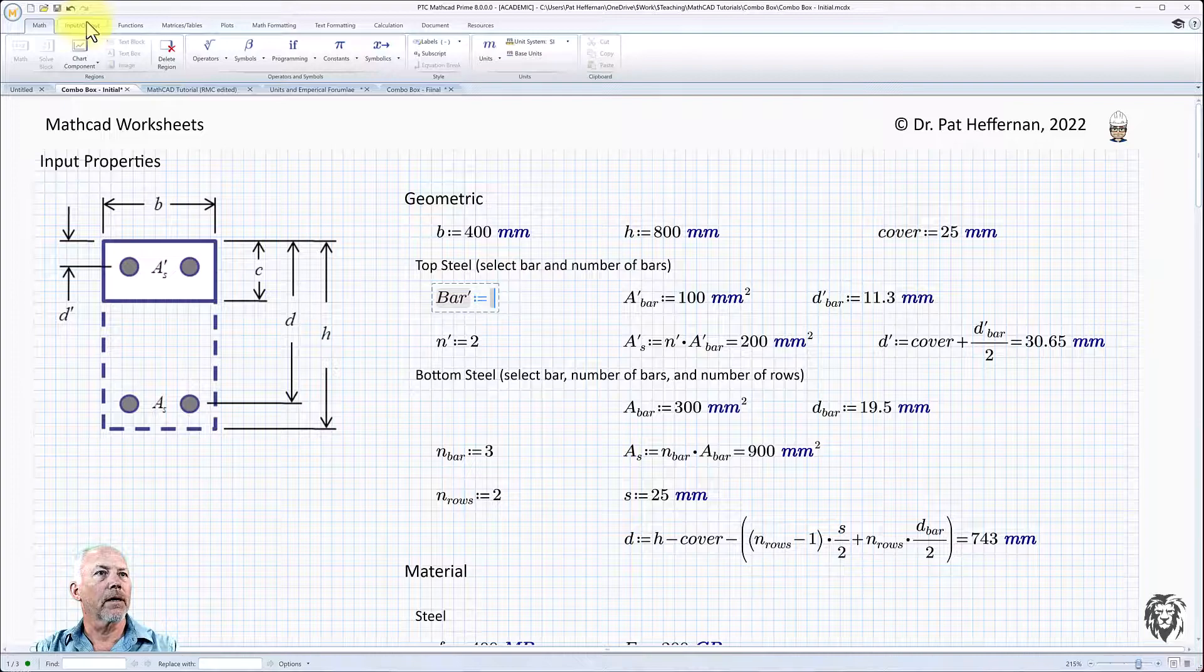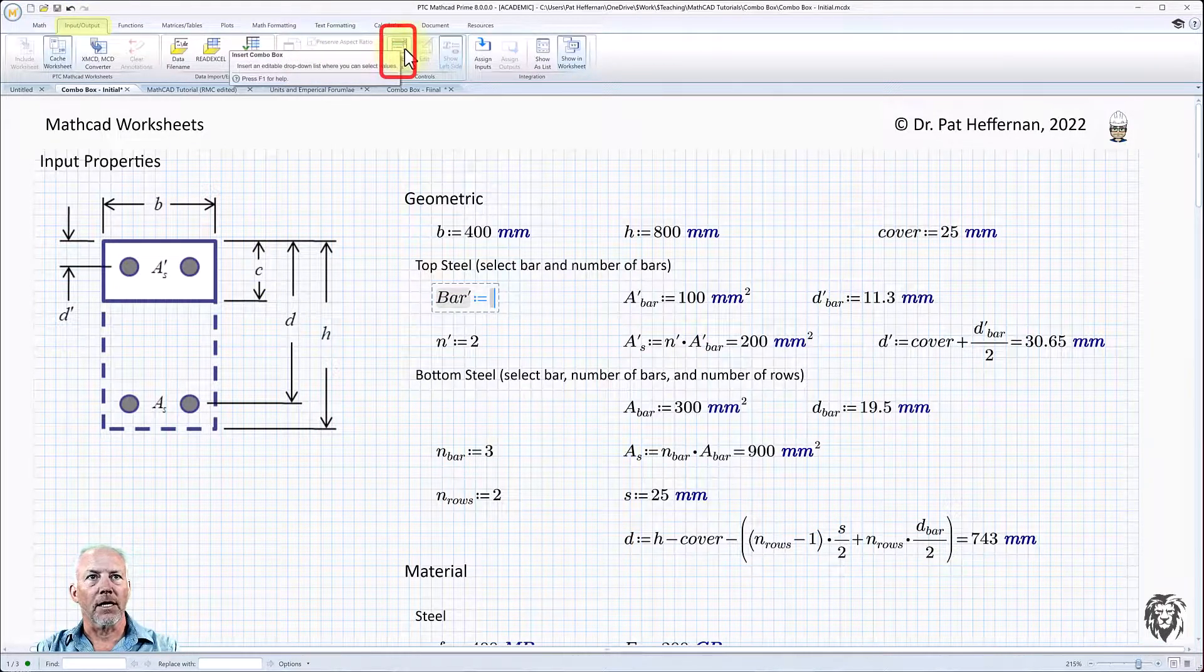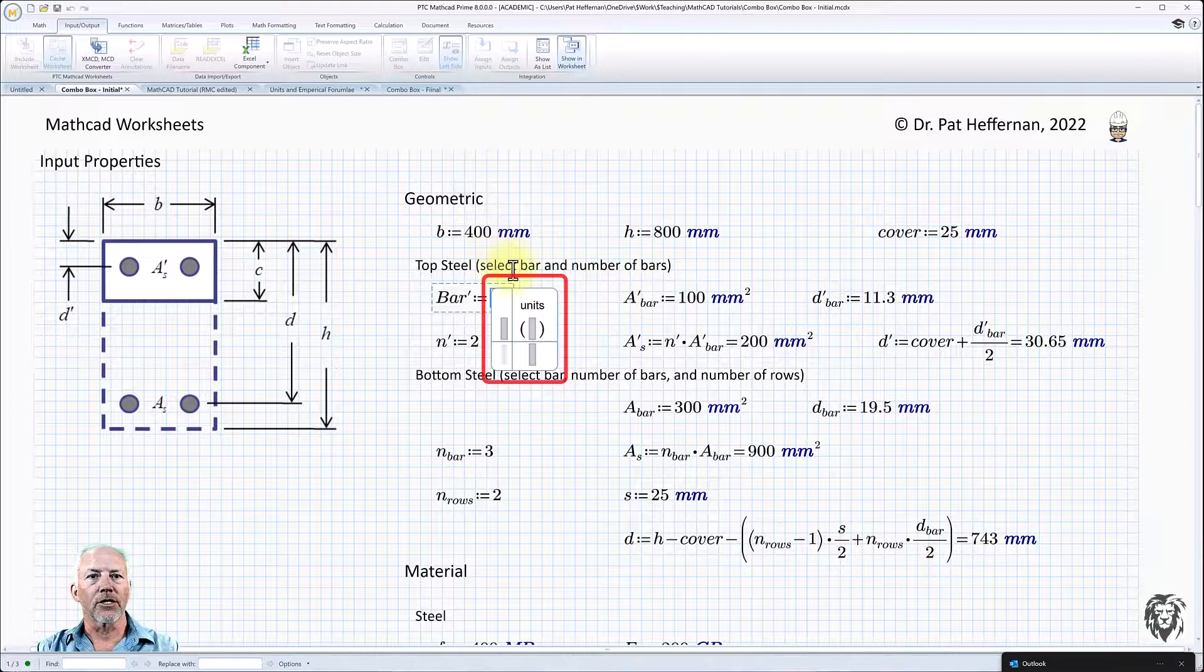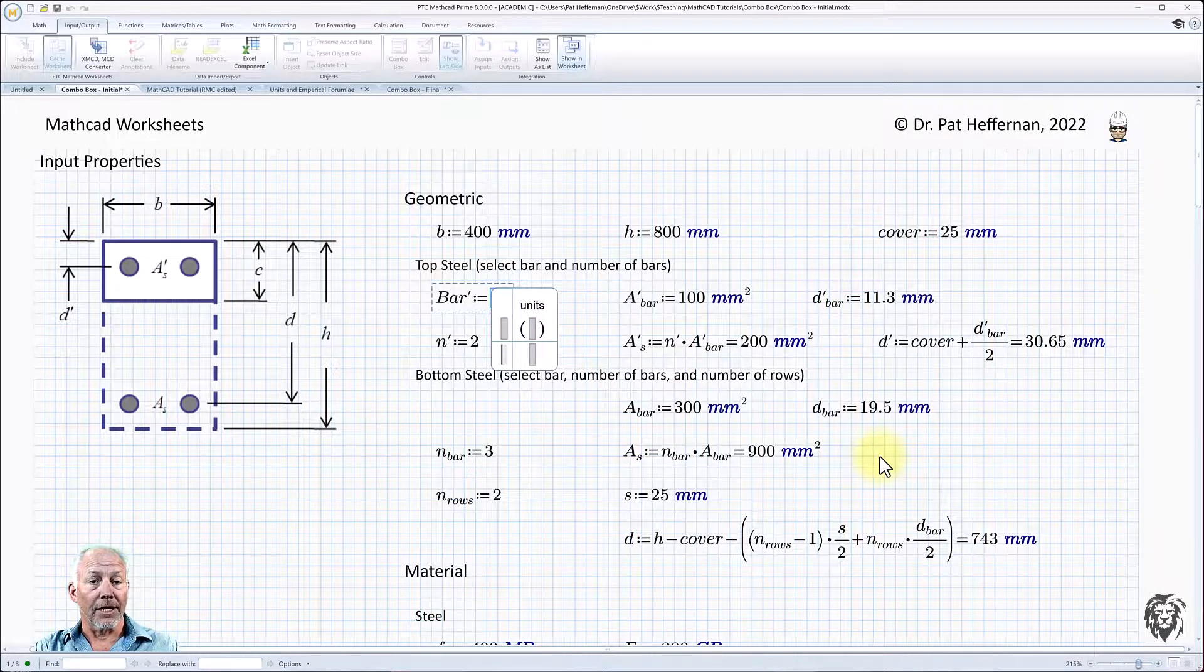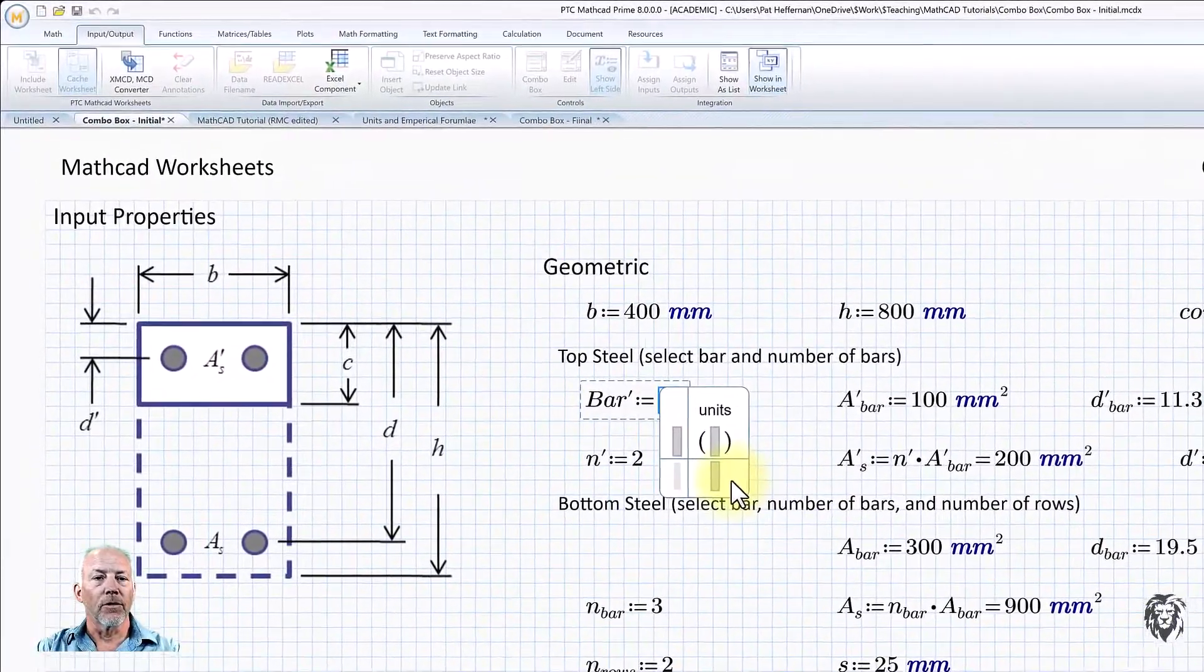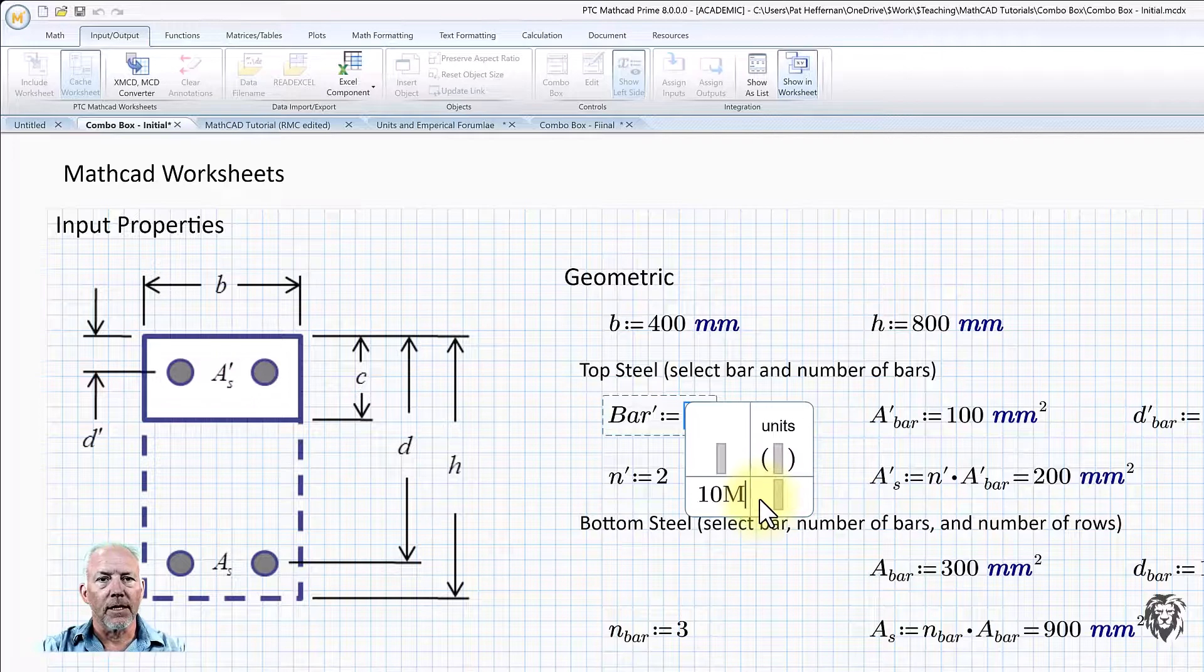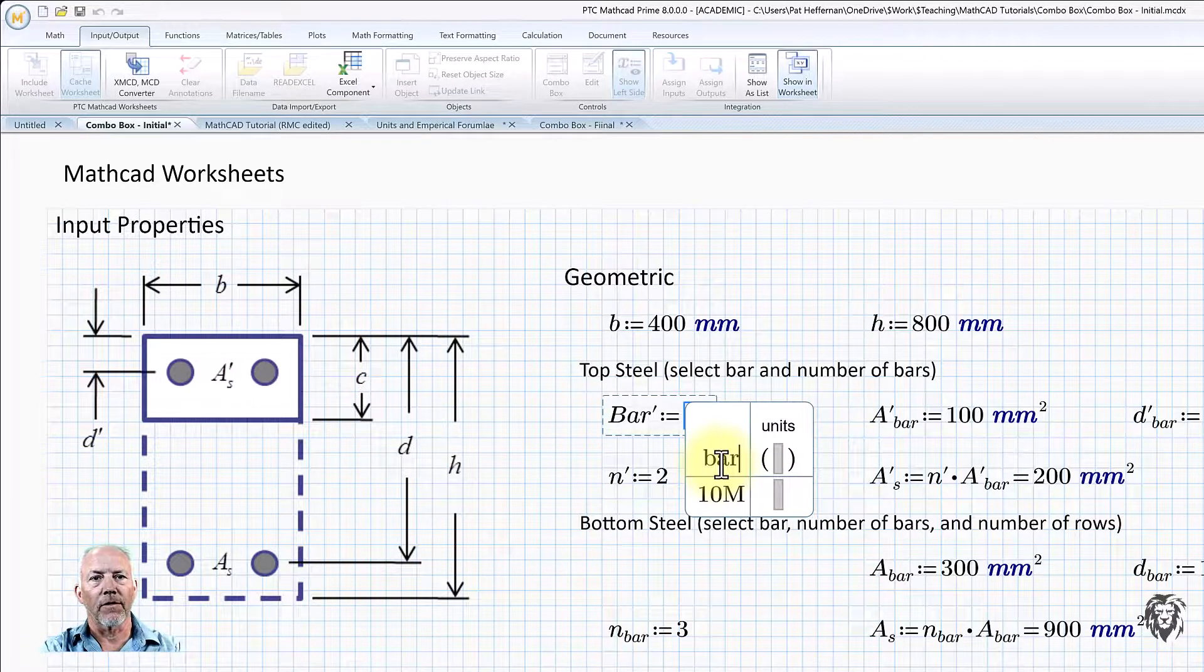So if we go up to the input output tab, we'll find the combo box a little more than halfway across. And we're going to choose insert. And we see this table comes up. And now what we have to do is put in that data table or the data set based on the bars that we're going to have. So I'll just start by doing the first one. The first one is going to be a 10M bar. So the 10 is the nominal diameter. These are different bars.